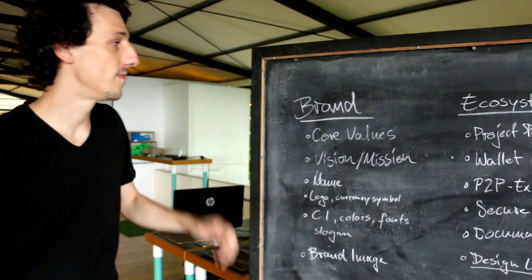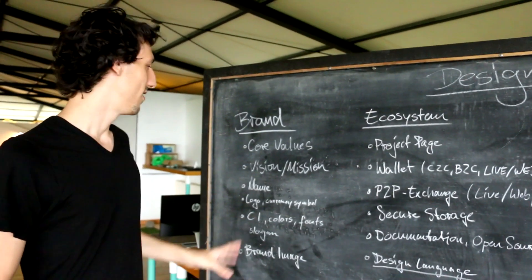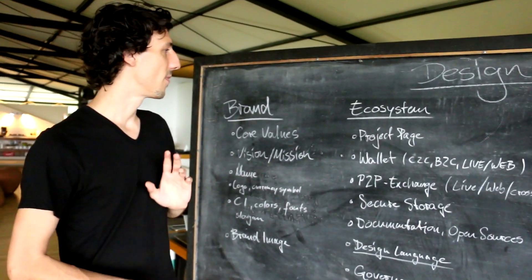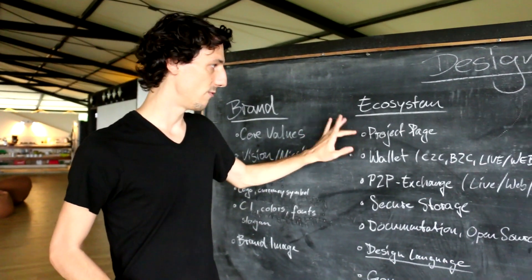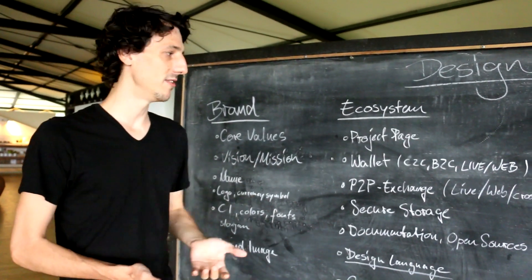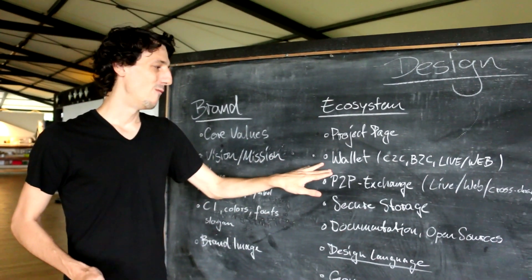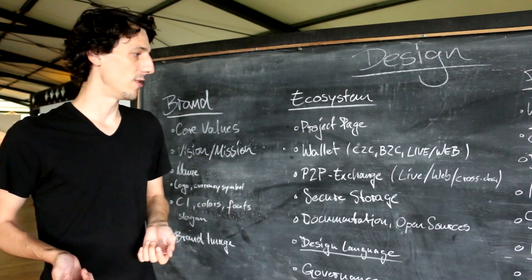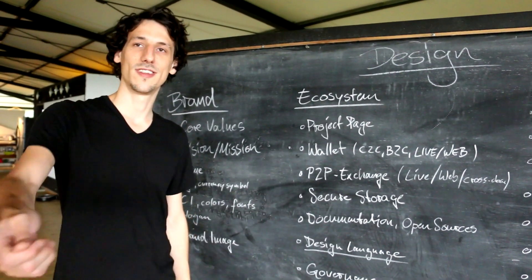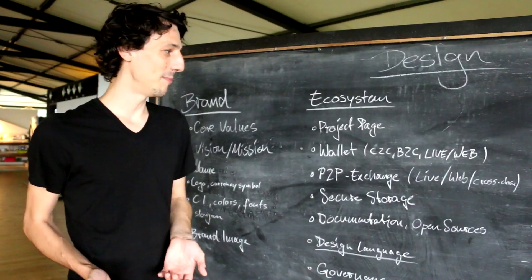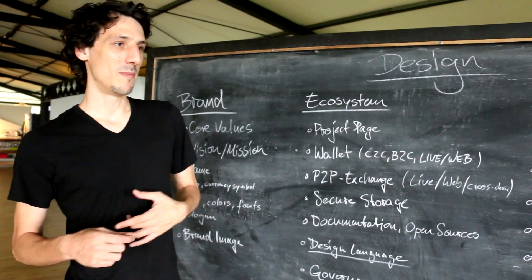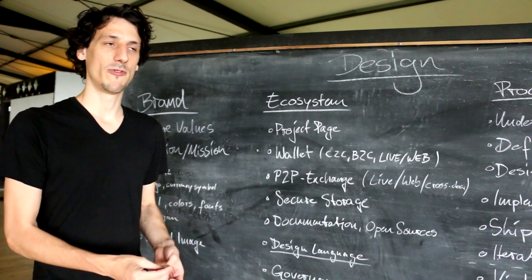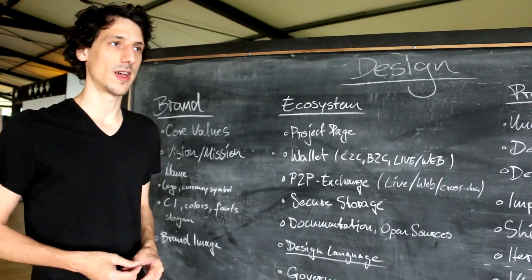The parts of our ecosystem: first the project page, where you get general info about our project. Then wallet or wallets — could be multiple wallets because there are multiple use cases. There are customer-to-customer payments, so if I want to send someone money we'd use our app. But if I want to pay a merchant at a restaurant, they'd use a specific app for merchants or for over-the-counter payments.